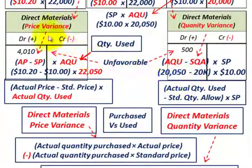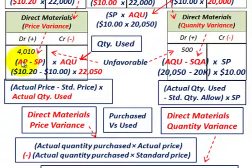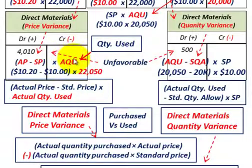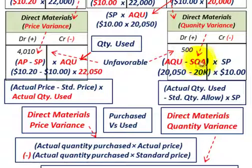To wrap up: the direct materials pricing variance compares your actual price paid to your standard price, times whichever quantity you're using — purchased or used. The direct materials quantity variance is based on the difference between actual quantity used and standard quantity allowed for the particular project, times the standard price. That gives your direct materials quantity variance, and that summarizes our subject.